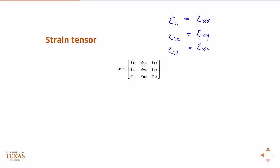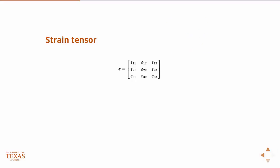And so what the components actually are — the reason for the one-half should now be clear, because we can write this really compactly. With one formula, for i equal 1, 2, 3 and j equal 1, 2, 3, I can get any of those components. That's what I'm trying to say.